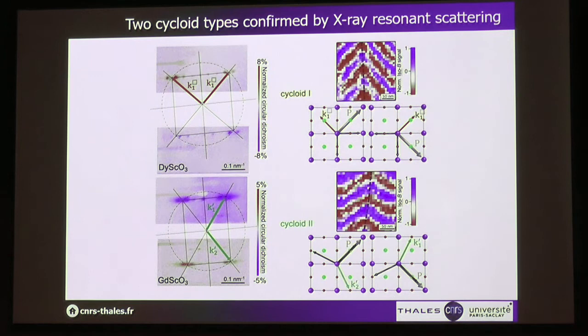We verified with X-ray resonant elastic scattering that we indeed have two kinds of cycloids. On the first film on dysprosium scandate, we have a square pattern defined by two cycloids 90 degrees from each other. On gadolinium scandate, we have a rectangular pattern because the angle between the two cycloids is not 90 degrees.